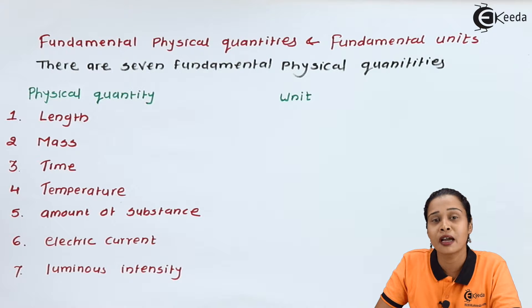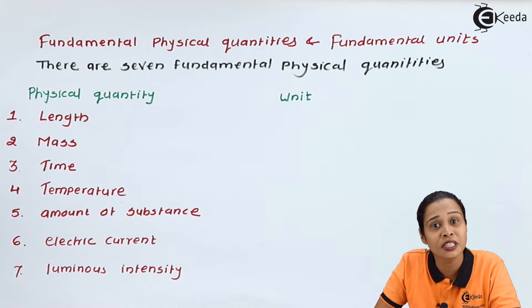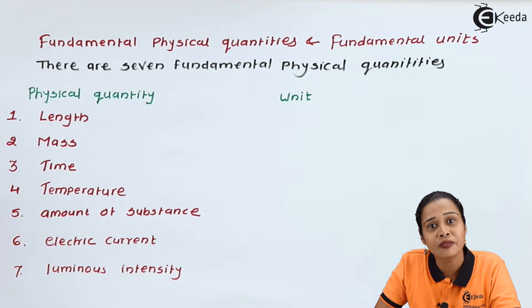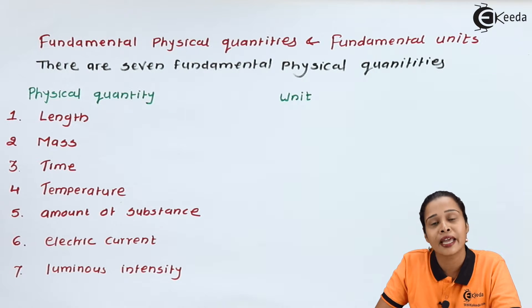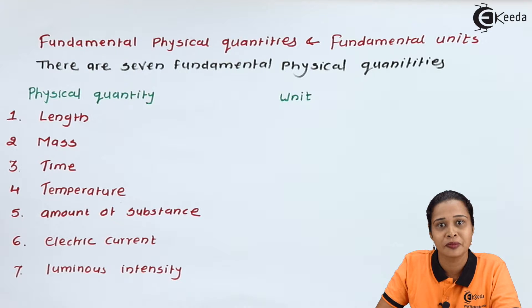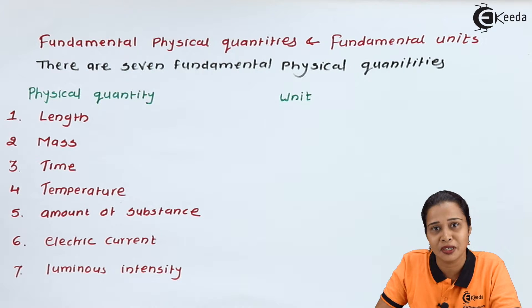But suppose I am saying I am hungry. How much hungry? That we cannot measure. Suppose I am saying my mother loves me a lot — how much she loves me? That is also not measurable. So the quantity which is not measurable is called a non-physical quantity, or it will not come under the category of physical quantity. In simple terms, the quantity which is measurable is called a physical quantity.